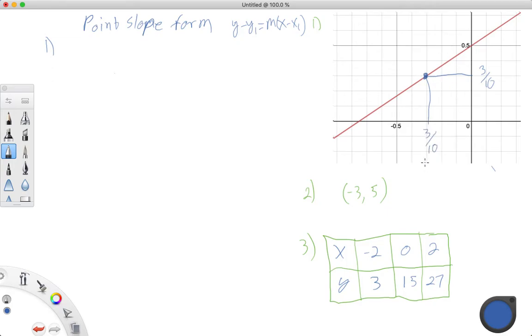So we have a point at 3 tenths and 3 tenths, or 0.3. So if we were to write that in point-slope form, we would say, well, y minus 0.3, or 3 tenths, equals m times x minus 0.3. I'm sorry. I've been doing too many of these today, I think. m times x minus 0.3.